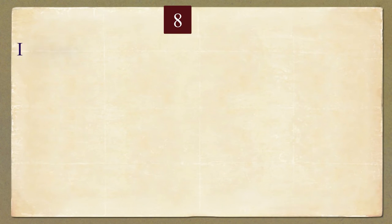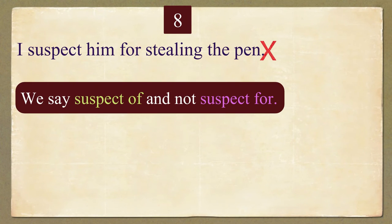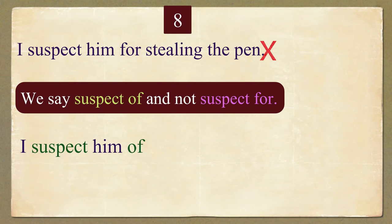Number eight: 'I suspect him for stealing the pen.' We say 'suspect of' and not 'suspect for.' Please repeat the correct sentence after me: I suspect him of stealing the pen.